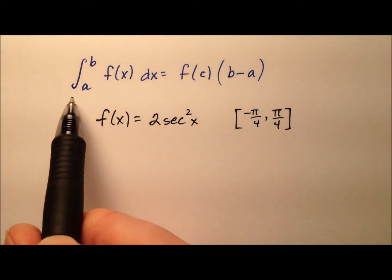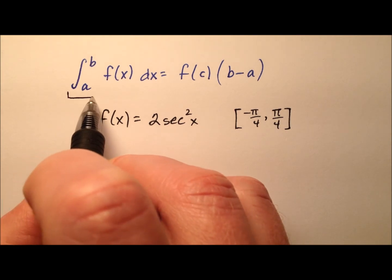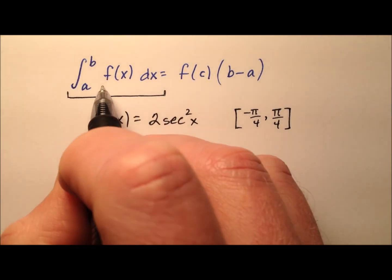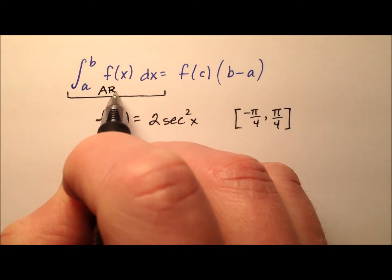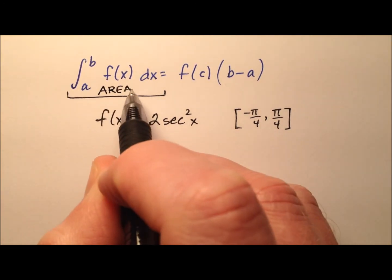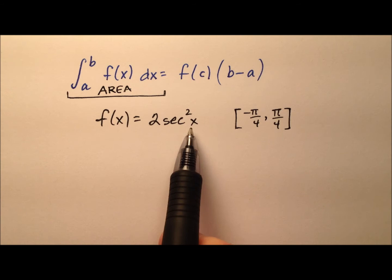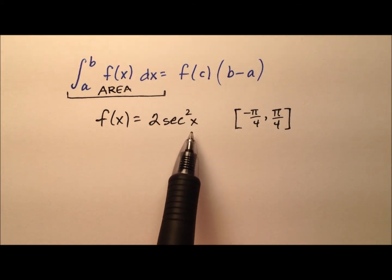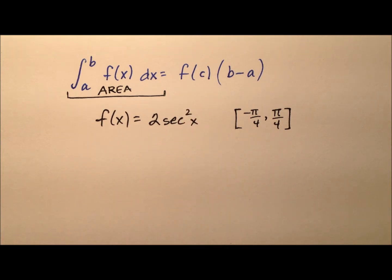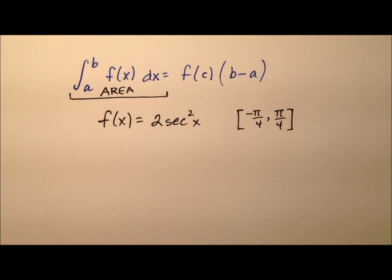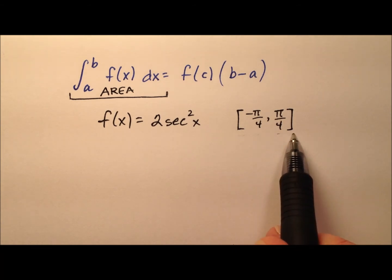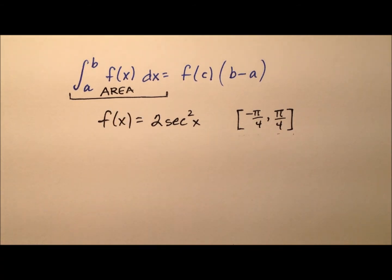On the left side of the mean value theorem, we are doing a definite integral. Definite integrals give us the area of a region — in this case it's bound above by the graph of 2 secant squared x, and bound below by the x-axis. So let's take a look at the graph of that. We can see that it's continuous over this interval, and we'll also see the shaded region that we're finding the area for.